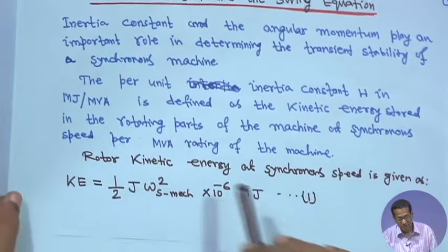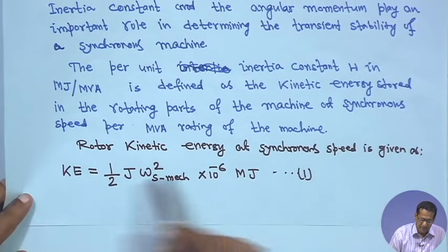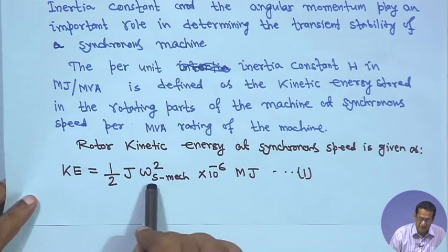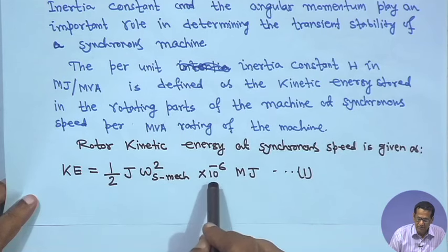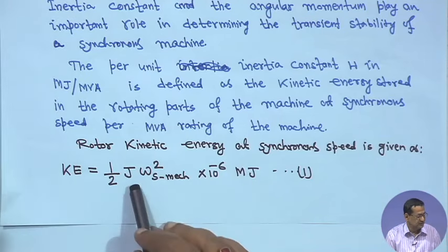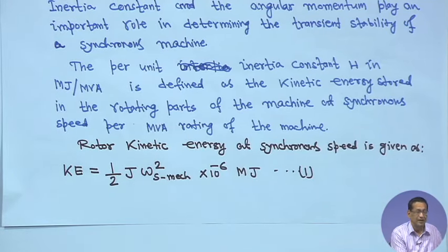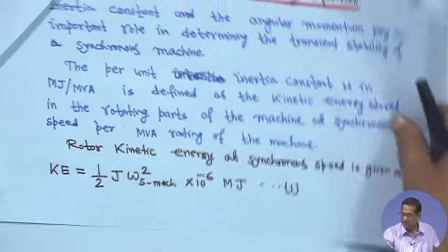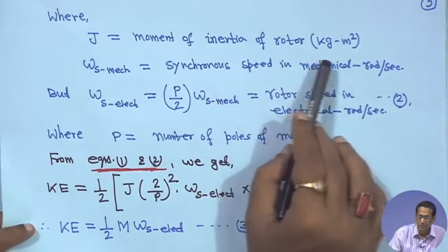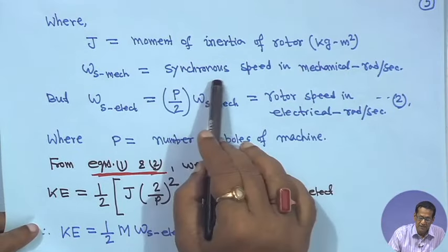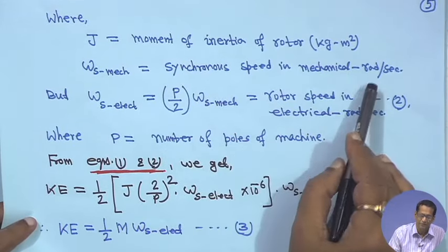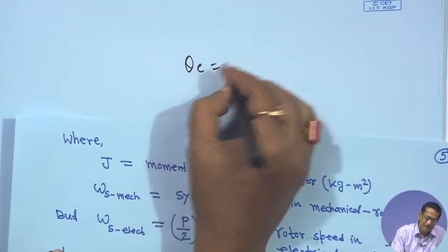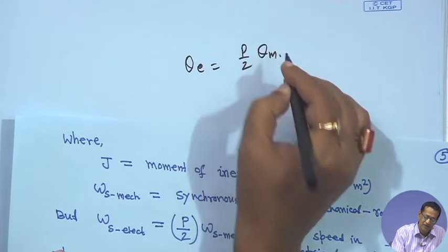The rotor kinetic energy at synchronous speed is given as: KE = (1/2) × J × ωs_mechanical² × 10⁻⁶ mega joules, where J is the moment of inertia of the rotor in kg·m², and ωs is the mechanical synchronous speed. We also know the relationship that θ_electrical = (P/2) × θ_mechanical, where P is the number of poles.